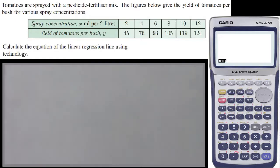We've got our independent variable, the spray concentration, the X values, which is in milliliters per two liters, so how many milliliters of the chemical that we're spraying per liter of the whole liquid.